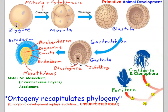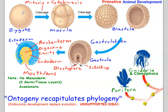The evidence for that scenario is how animal embryos develop. Embryonic development of animal embryos looks very similar to the scenario on the previous slide — this is known as ontogeny recapitulates phylogeny, a long-winded way of saying that embryonic development replays evolution. It's important to note this is a largely unsupported idea with limited experimental evidence, but without a time machine we're probably never going to know for sure how animals first evolved.